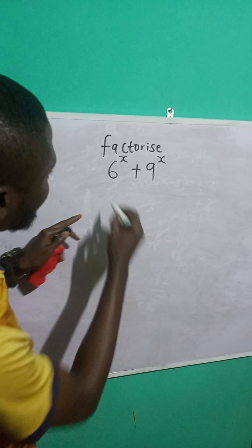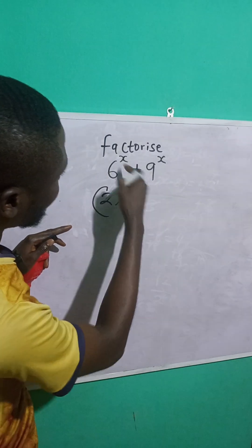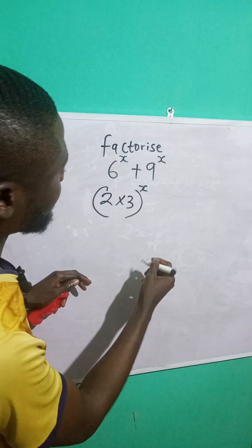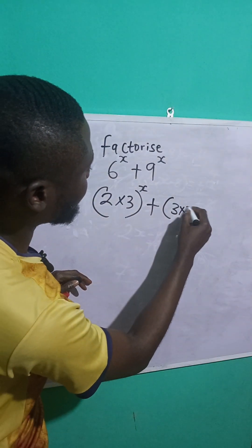So, 6 can be written as what? 2 times 3 raised to the power of x because we have an exponent of x. Plus, 9 is the same as what? 3 times 3.